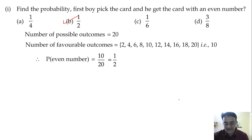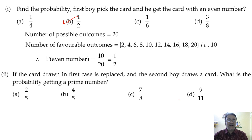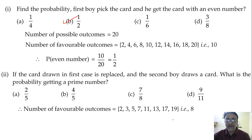Next, if the card drawn in the first case is replaced and the second boy draws the card, what is the probability of getting a prime number? So how many prime numbers are there from 1 to 20? See: 2, 3, 5, 7, 11, 13, 17, 19. How many? 8. So the number of favorable outcomes is 8.